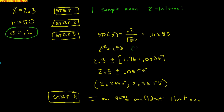For 95% confidence, Z* is 1.96. We build the interval: 2.3 plus or minus 1.96 times 0.0283, giving a margin of error of 0.0555 ounces. So I'm 95% confident that the true average weight of a bullfrog is between 2.2495 ounces and 2.3555 ounces. The whole process should be extremely familiar from what we did with proportions.